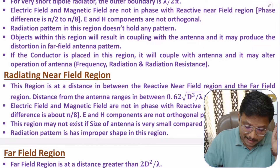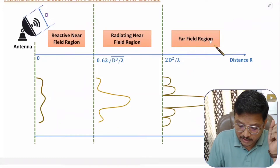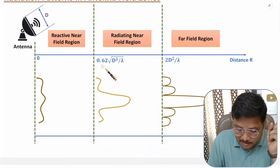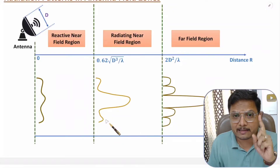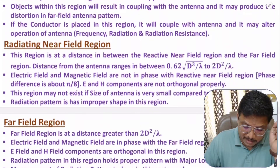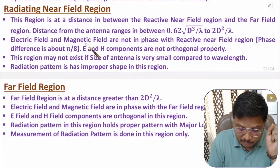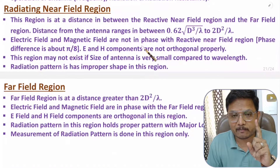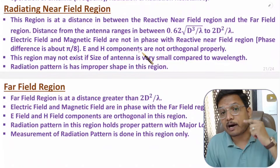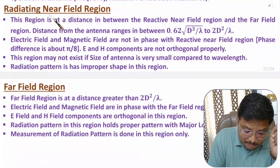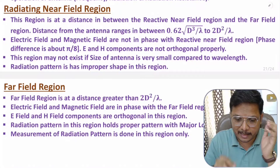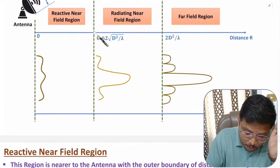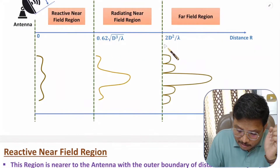The second region is the radiating near field region, existing between the reactive near field region and far field region — from 0.62√(d³/λ) to 2d²/λ. Here, some pattern is forming but not an exact pattern. Electric field and magnetic field are not fully in phase; in the radiating near field region there is a phase error of about π/8. It starts from π/8 at the inner boundary and goes to 0 at the far field boundary, where there will be zero phase error in the far field region.